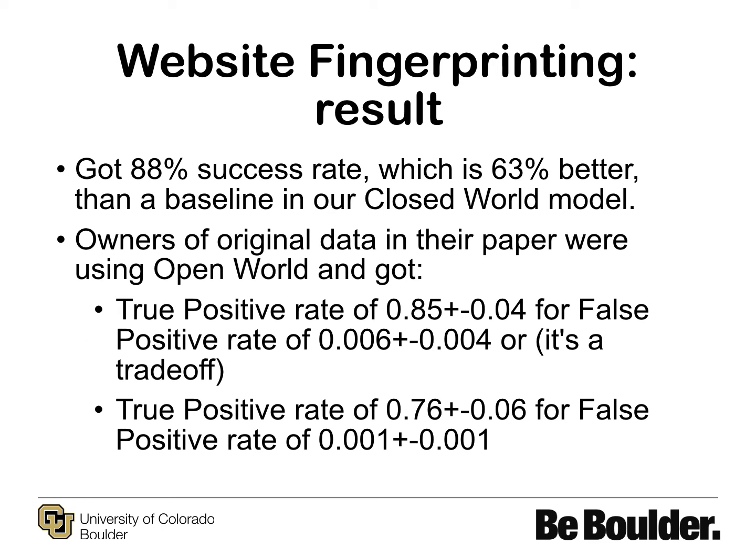As a result, we were successfully able to derive features and their weights using LSTM, then applied QDA and achieved an 88% success rate, which is 63% better than our baseline model. Our baseline model was a very simple KNN on the first 15 packets. To put our rate in context with results from the original paper, we have to note that they used the open world model, which is inherently more complex.